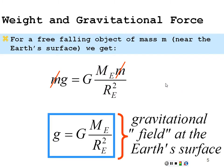If you put in G = 6.67 times 10 to the minus 11, the mass of the earth = 6 times 10 to the 24 kilograms, and the radius of the earth = 6.37 times 10 to the 6 meters, square that, you get 9.80 meters per second squared. So you could actually calculate what the gravitational acceleration should be at the surface of the earth.